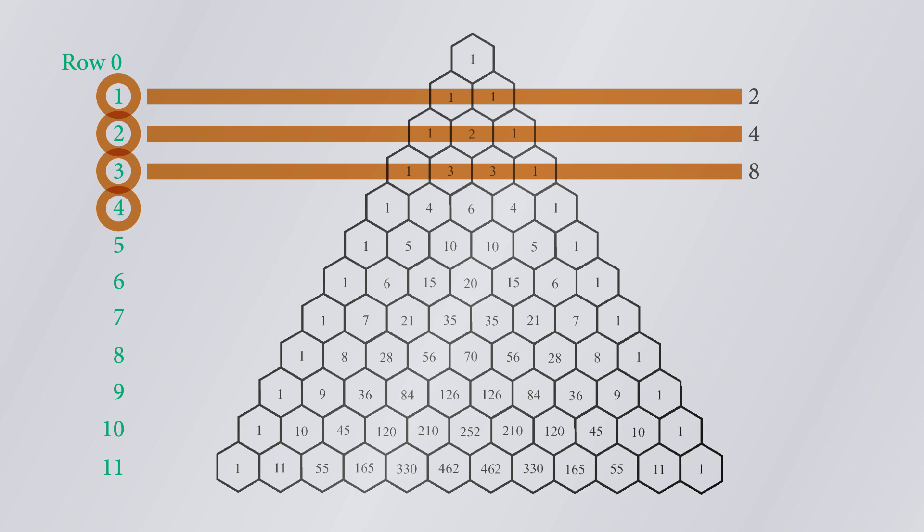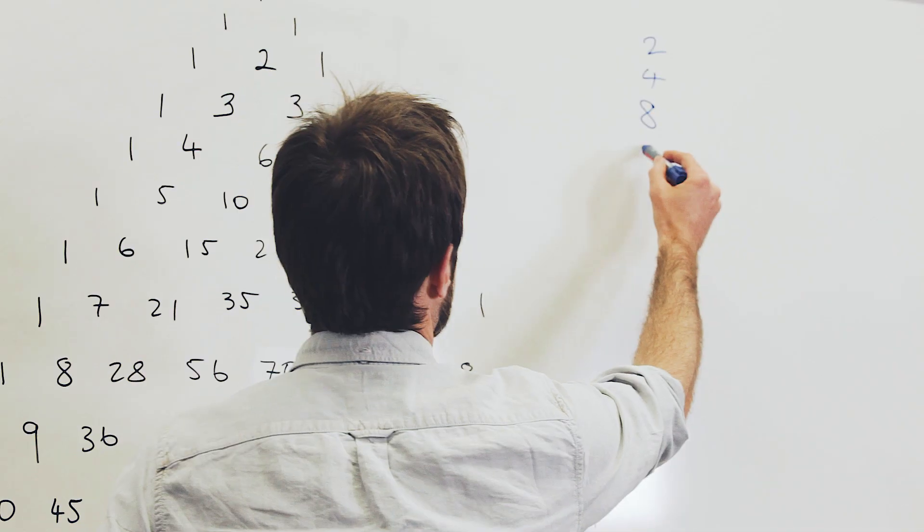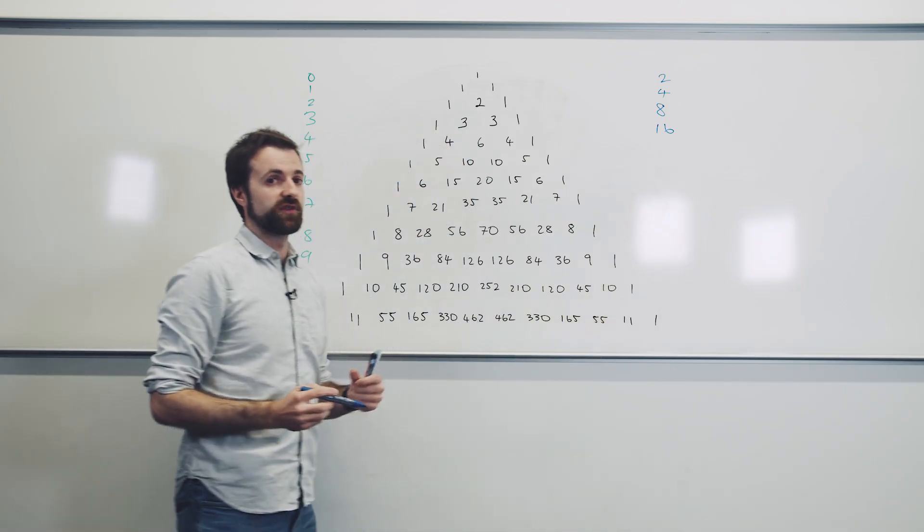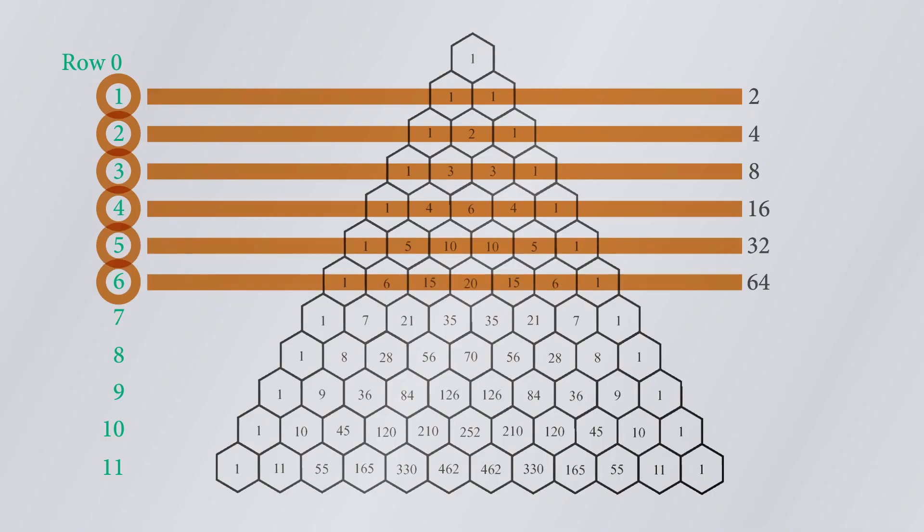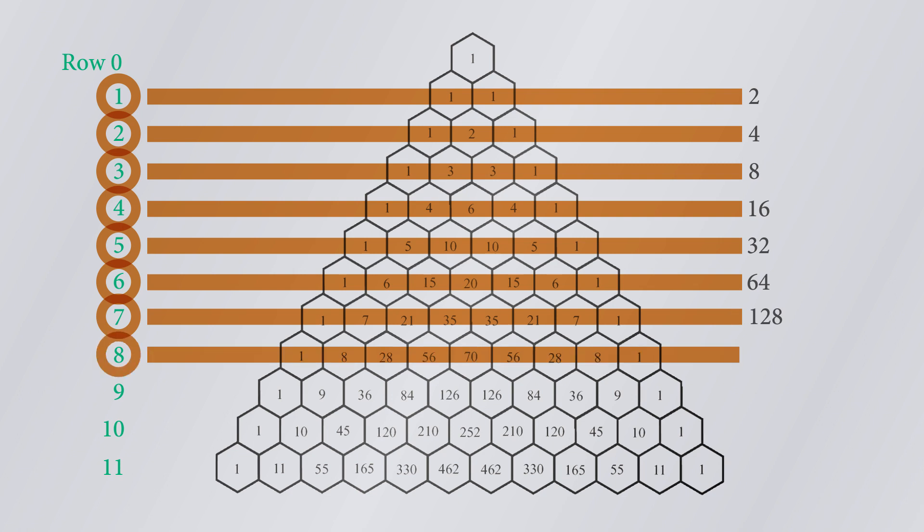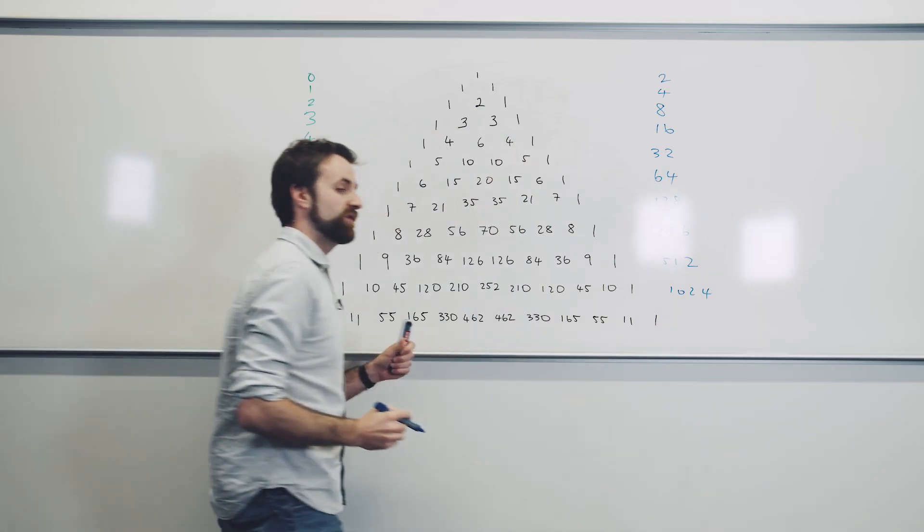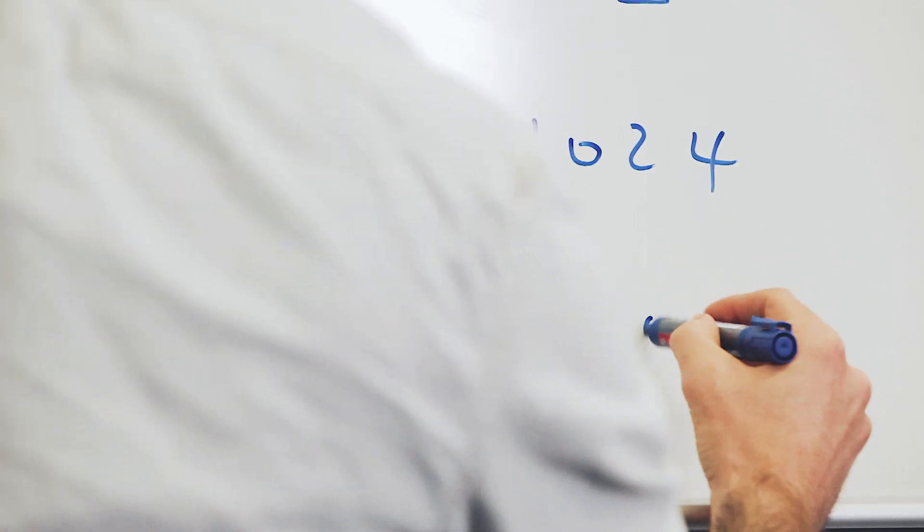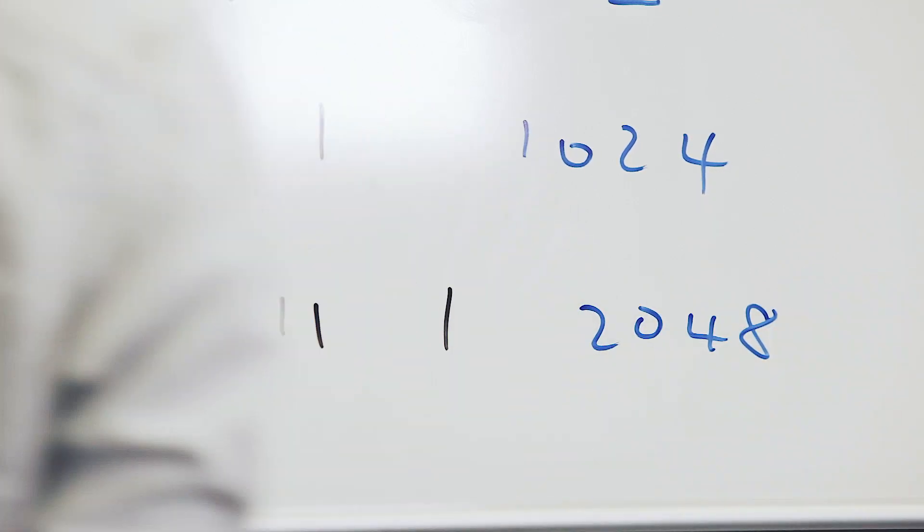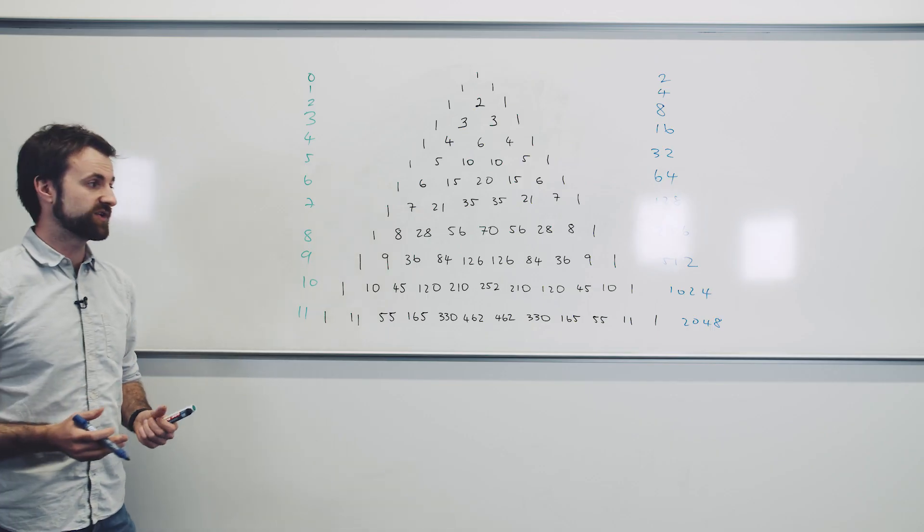Flipping the coin four times, if I add these numbers up, I find that there are sixteen different ways of doing that. That's two to the four, then two to the five, thirty-two, sixty-four ways, one hundred and twenty-eight, two hundred and fifty-six, five hundred and twelve, one thousand and twenty-four. And then by the time we're flipping the coin eleven times, there are actually two thousand and forty-eight different mutations of heads and tails that can come up.